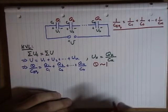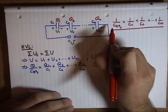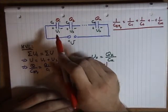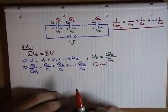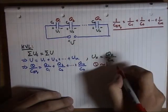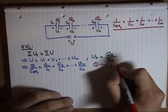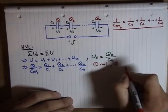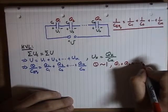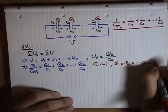in this case, in one branch, in one single branch, we have that all the capacitors have the same charge. So, Q1 is equal to Q2 is equal to Qn equals Q.